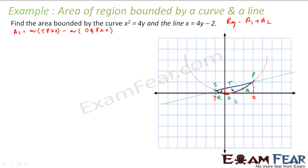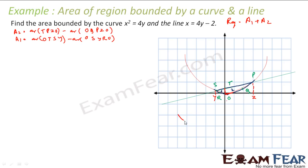Finding each piece is simple once the regions are identified. For area 1, the approach is: find the large trapezium-type region OTSY, then subtract the area under the parabolic curve OSYR. This gives us area 1. I am zooming in to this part for more clarity.